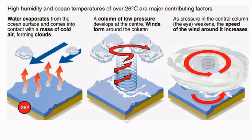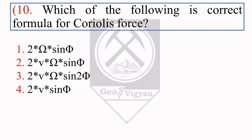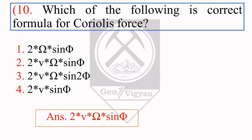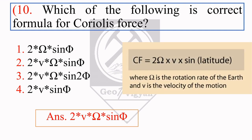The next question: which of the following is the correct formula for Coriolis force? This is a direct question — you only need to learn the formula. The right formula is 2vΩsin(φ), where Ω is the rotating rate of earth and v is the velocity of motion. The Coriolis force is an inertial force that acts on objects in motion within a rotating frame of reference. Simply put, winds in the northern hemisphere deflect rightward and in the southern hemisphere leftward due to Coriolis force.